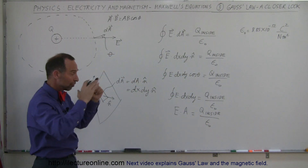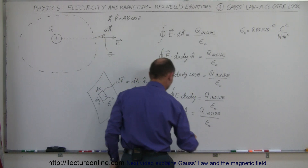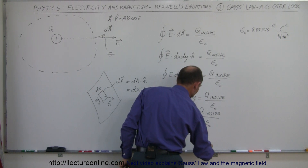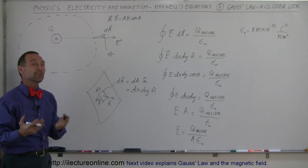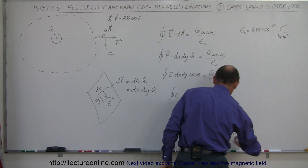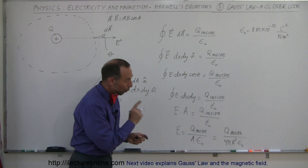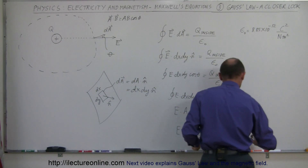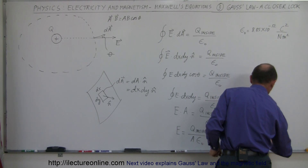When we divide both sides by the surface area of the Gaussian surface, the electric field strength at the edge of the surface equals Q inside divided by the area times epsilon sub nought. For a perfect sphere, the area is 4πr², so this becomes E equals Q inside divided by 4πr² times epsilon sub nought. Since 1 over 4π epsilon sub nought equals k, the constant used in Coulomb's law, this simplifies to E equals k times Q inside divided by r².